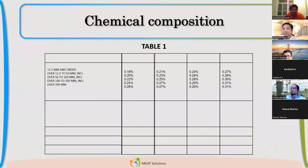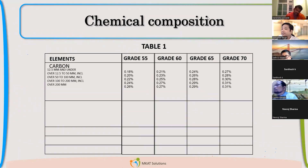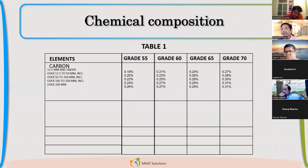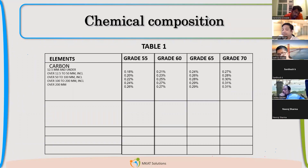Now coming to the chemical composition. If you see the chemical composition table, carbon is the main element for carbon steel — the name itself is carbon steel. And there is variation in carbon content depending upon the different thicknesses. If we have 12.5mm and under, we have a different chemical composition. If we have over 200mm plate, we have a different chemical composition. As plate thickness increases, the carbon requirement is also increasing — that is the trend.